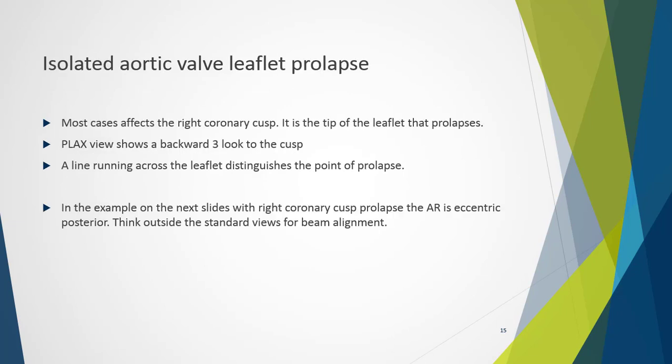Isolated prolapse is a relatively common pathology and in most cases affects the right coronary cusp. It is often missed by sonographers who are not aware of the specific features demonstrating this mechanism. The main body of the aortic valve is held by its support and coapts normally — it is the tip of the leaflet that prolapses. When viewing from a parasternal long axis view, the cusp will have a backward three look to indicate the competent and prolapsing components.